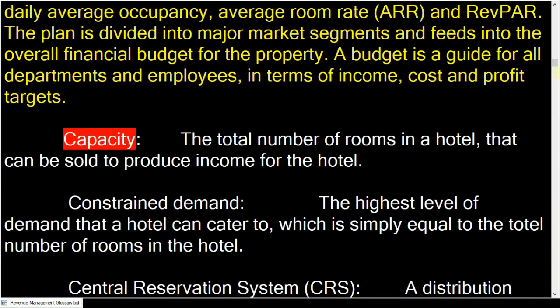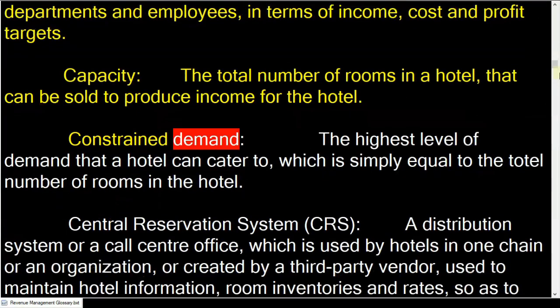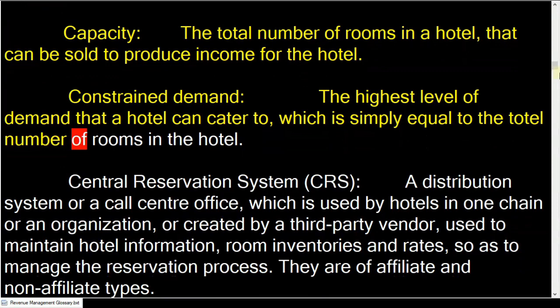The total number of rooms in a hotel that can be sold to produce income for the hotel. Constrained Demand: the highest level of demand that a hotel can cater to, which is simply equal to the total number of rooms in the hotel.